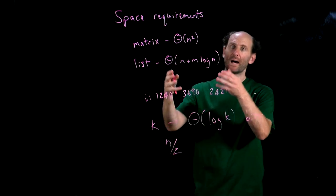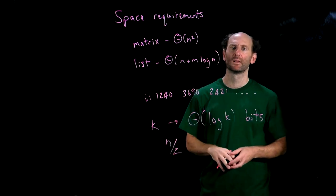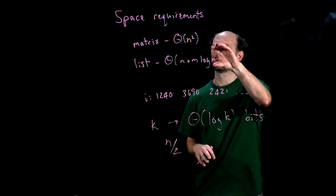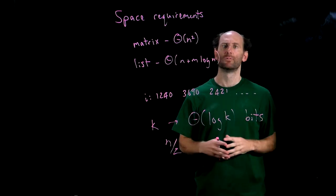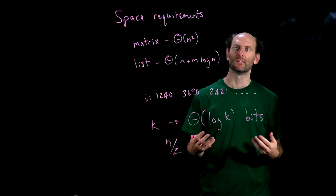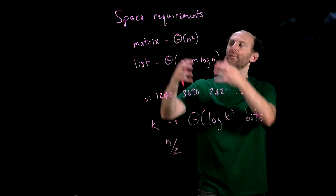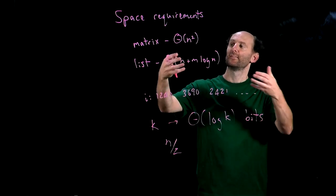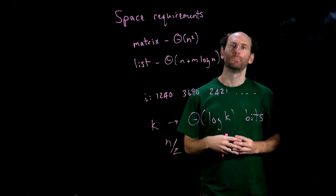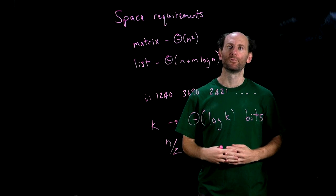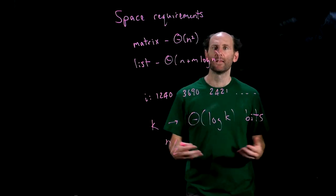Now for reasonably sparse digraphs, we still have a much smaller space requirement for lists than we do for matrices. But as you start dealing with denser and denser digraphs, these two come much closer together in terms of space requirement.